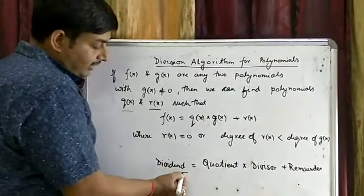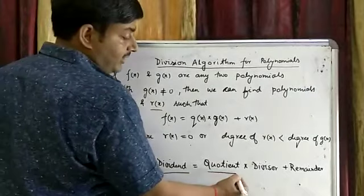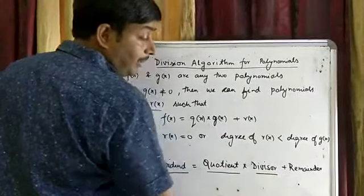That means dividend equals quotient into divisor plus remainder.